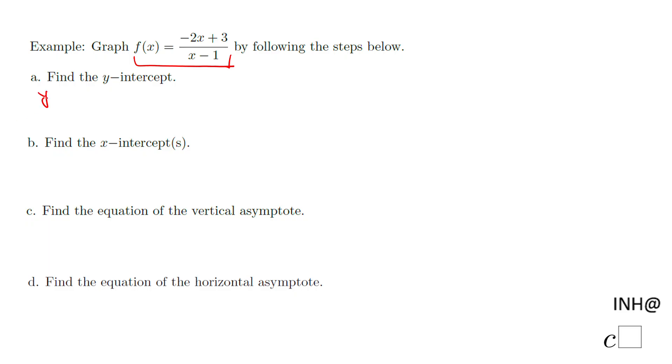That means you make x equal zero, which is the easy step, right? Because f of zero in this case is, if you plug zero, this is gone, this is gone, you're gonna have only positive three over negative one left, which is negative three. So the point is zero and negative three.